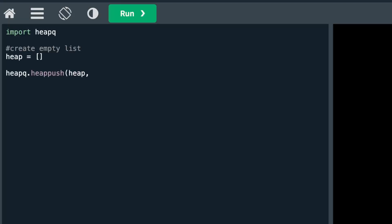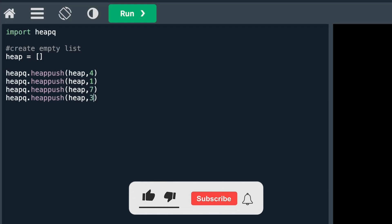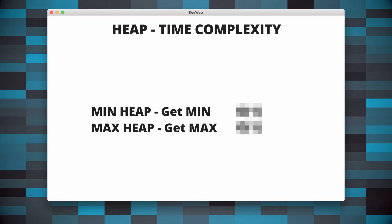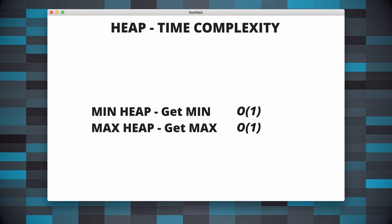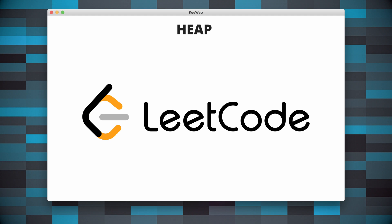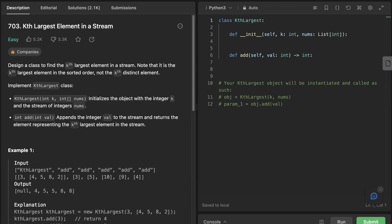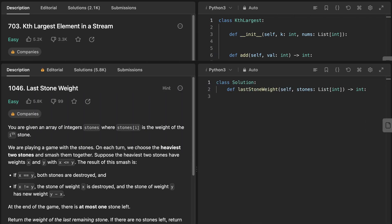We first need to create an empty list and then push elements onto the heap using the heappush method. In order to pop the smallest element, we can then use the heappop method. There is also a very useful heapify function, which given a list transforms it into a min heap with a time complexity of O(n log n), and this will come handy during interviews. Heaps are useful as they provide constant time access to the top element, whether it be min or max. Some LeetCode questions I suggest you look into which require heaps are the following: Kth Largest Element in a Stream and Last Stone Weight.